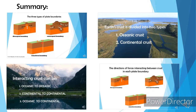For our summary, we discussed the three types of plate boundaries: divergent boundary, convergent boundary, and transform boundary. We also mentioned the two types of Earth's crust — oceanic crust and continental crust — and how the interacting crust can be oceanic-to-oceanic, continental-to-continental, and oceanic-to-continental. We also identified the direction of forces interacting between the crust in each plate boundary.